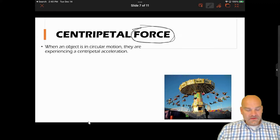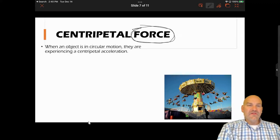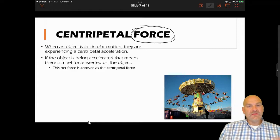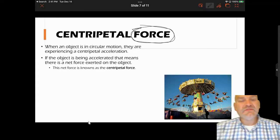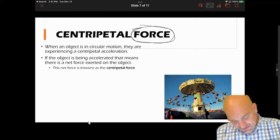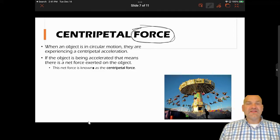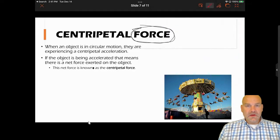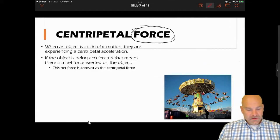When an object is in circular motion, they're experiencing a centripetal acceleration, which means it's being accelerated. If the object's being accelerated, that means there's a net external force exerted on it. Now, this net force is known as the centripetal force, and we're going to kind of go with the saying here in a little bit about this centripetal force.